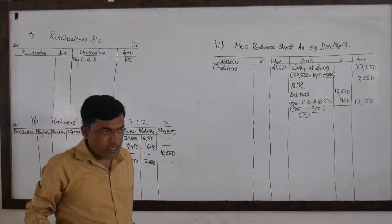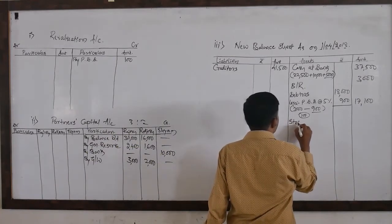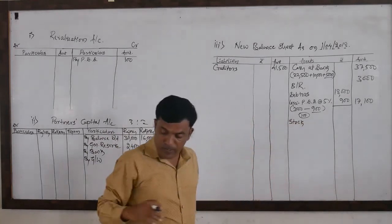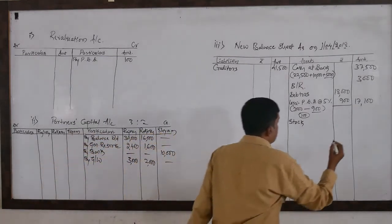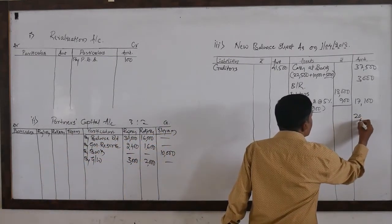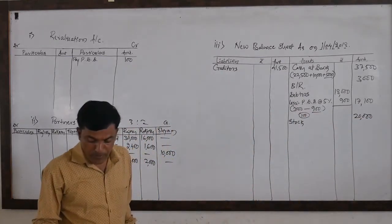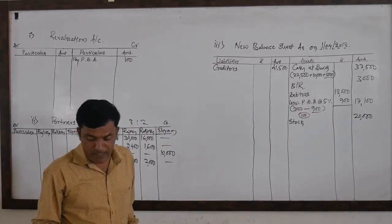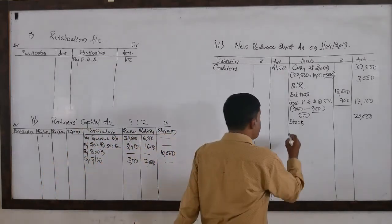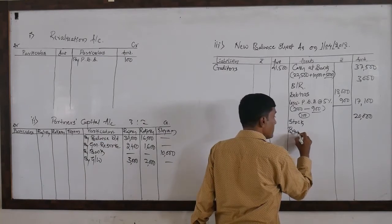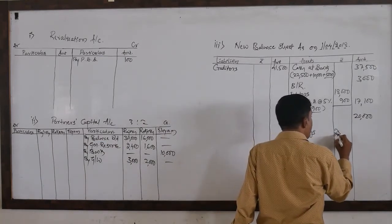Stock — there is no adjustment for stock. Stock is 20,000, written on the outer column. After stock, buildings — there is an adjustment. Buildings opening value is 25,000.